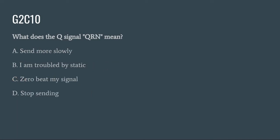G2C10: What does the Q signal QRN mean? A. Send more slowly. B. I am troubled by static. C. Zero beat my signal. Or D. Stop sending. The correct answer is B: I am troubled by static.